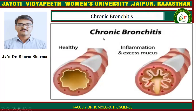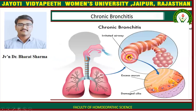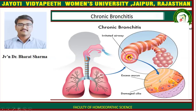Here is a diagram showing chronic bronchitis — a healthy bronchus compared to an inflamed one with excessive mucus production. Here is another diagram showing chronic bronchitis with irritated airways causing excessive mucus and damaged cilia.